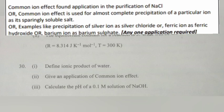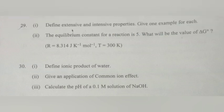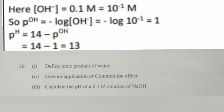Question 3: Calculate the pH of a 0.1 M solution of NaOH. Answer: Here [OH-] equals 0.1 M equals 10 to the power minus 1 M.